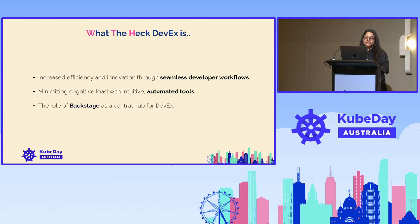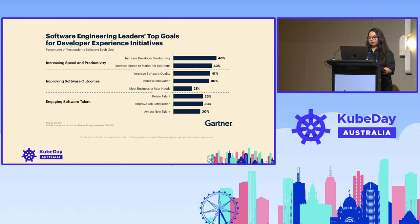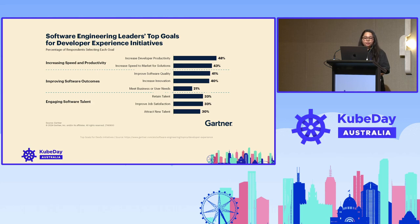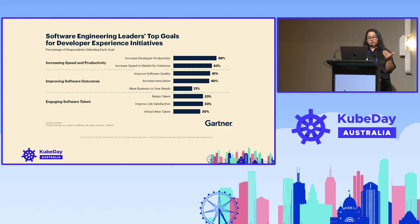The role of Backstage as a central hub for developer experience — we're going to talk about that as well. This is a Gartner report that includes software engineering leaders' top goals for developer experience initiatives as per 2024. They are really focused on increasing speed and productivity, improving software outcomes, because if your developers are working fast and not focusing on all the manual work, the productivity will be increased and eventually your business will be very fast. And engaging software talent.